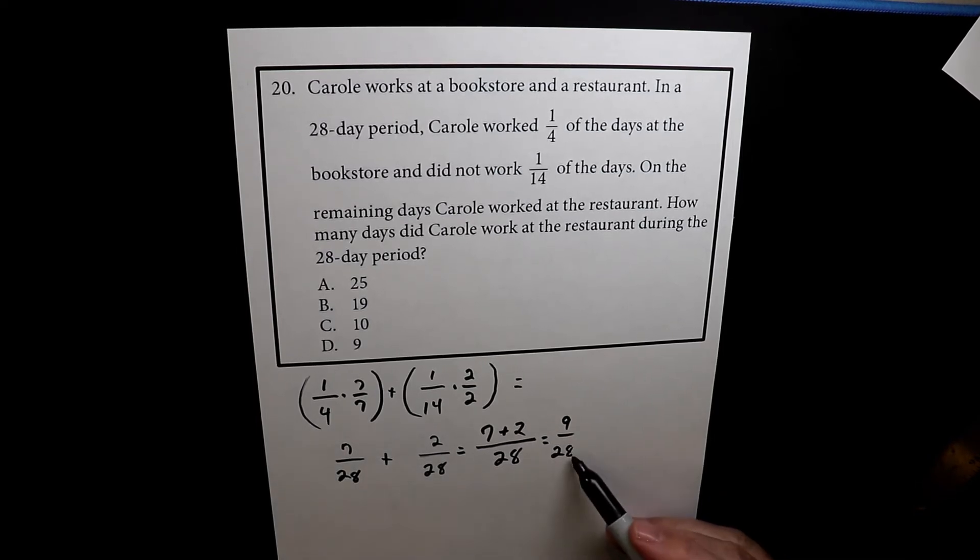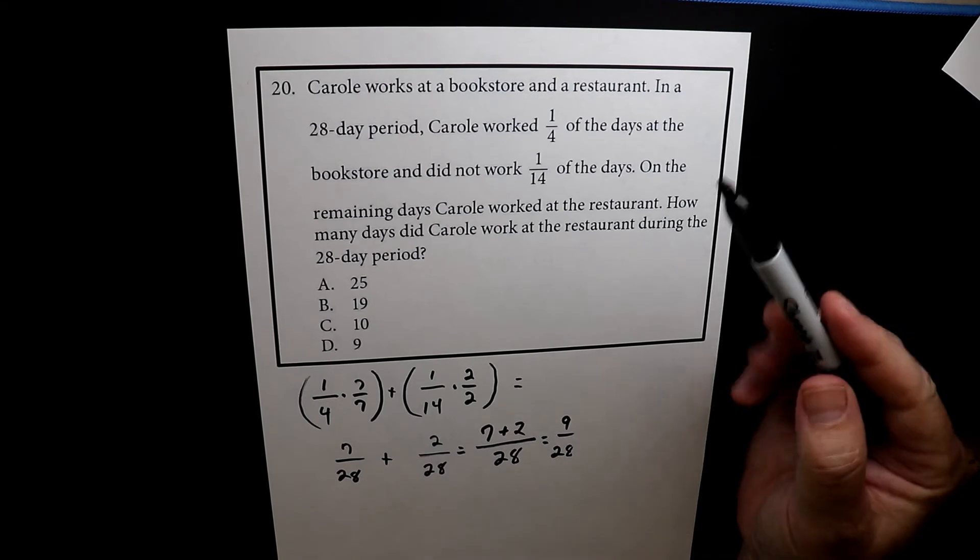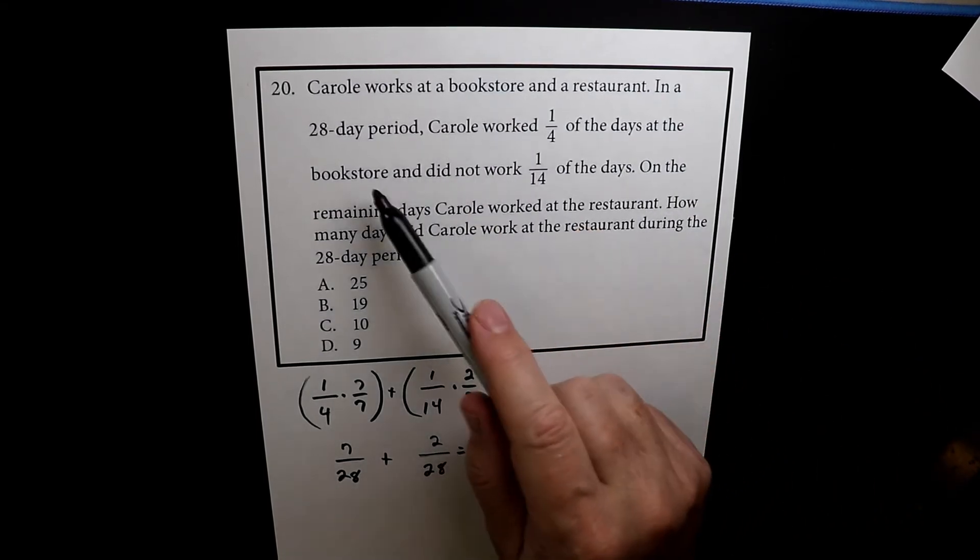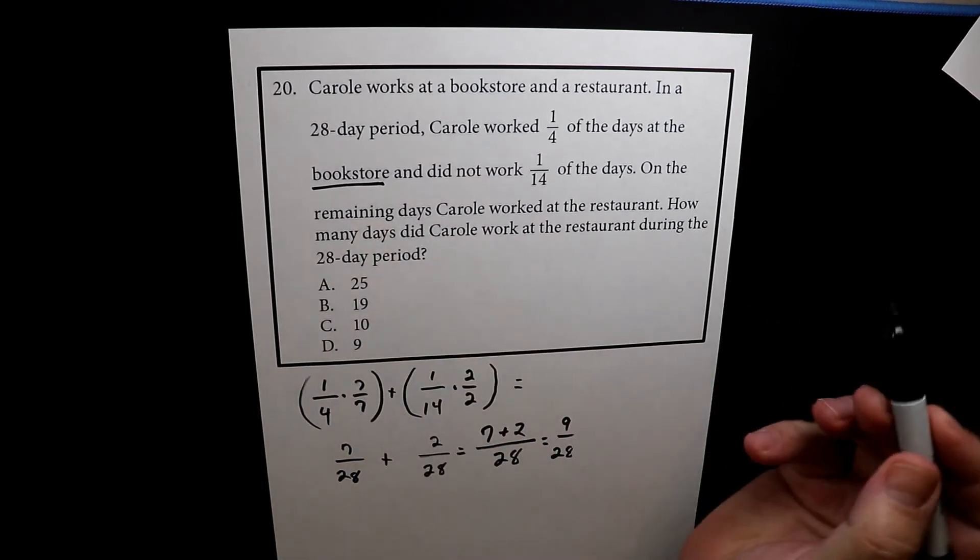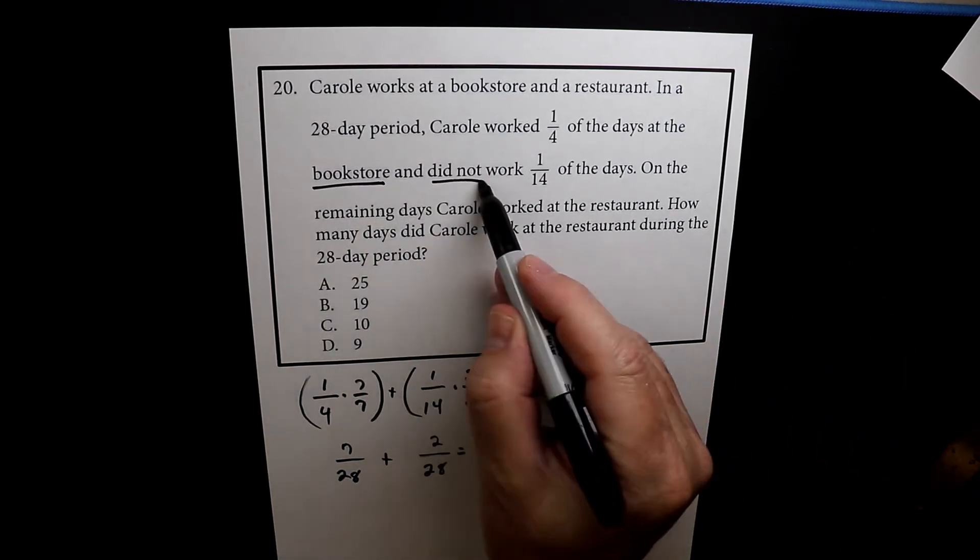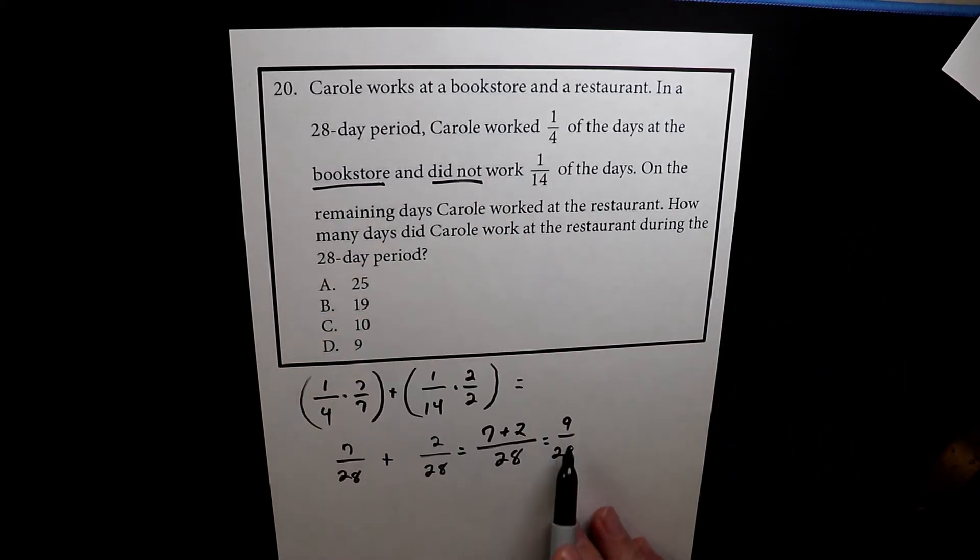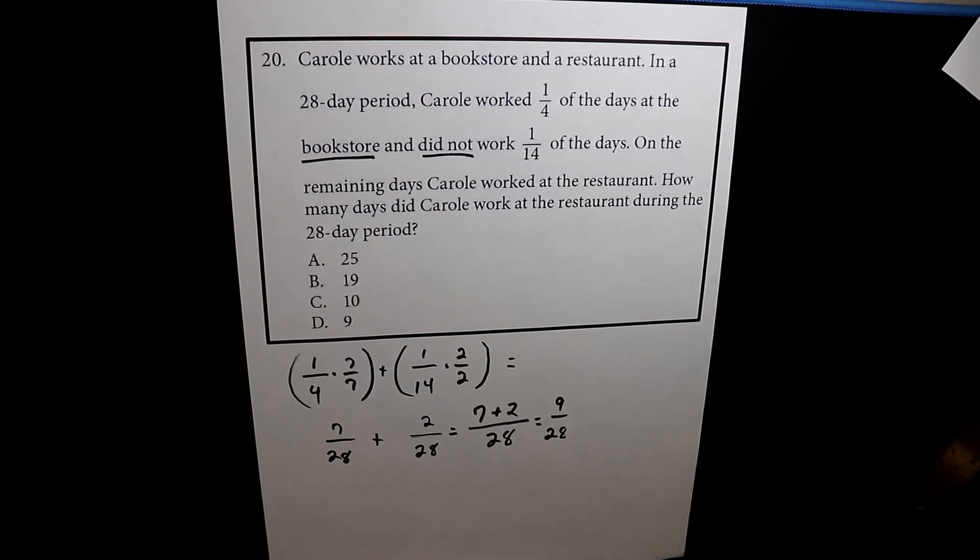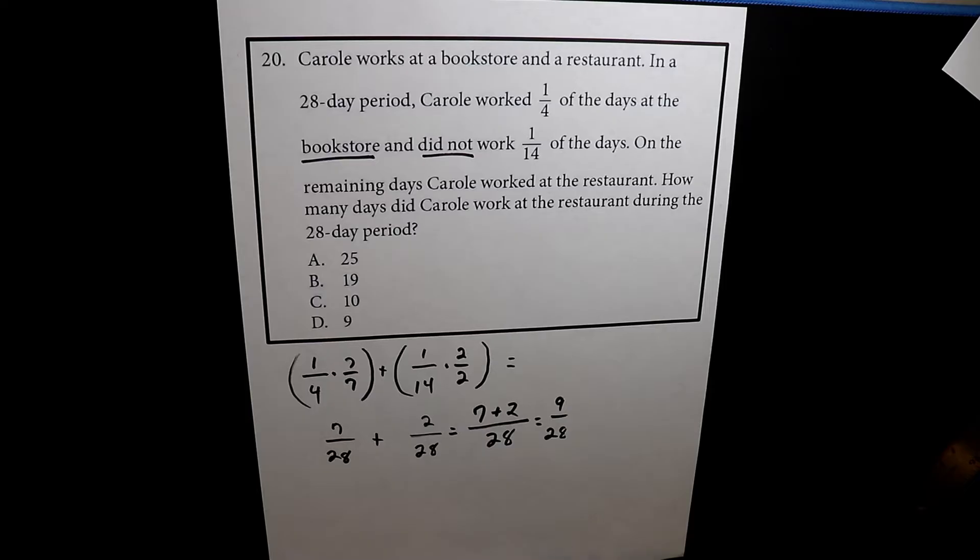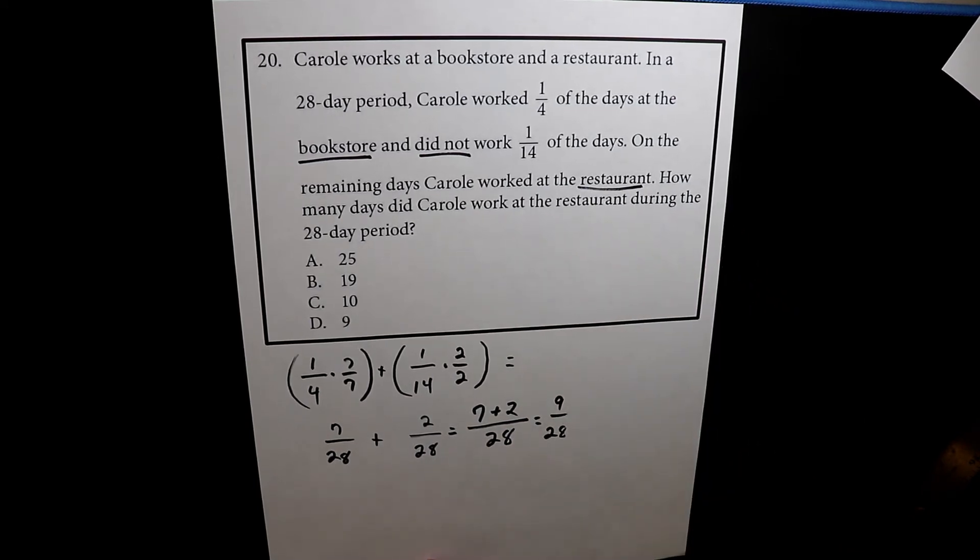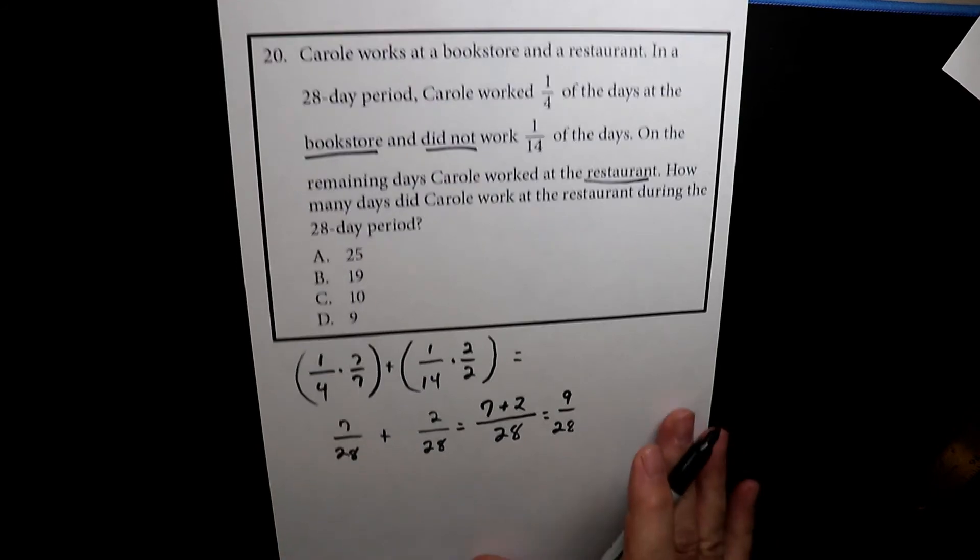So nine 28ths are time that Carol either worked in the bookstore, she was at the bookstore, or she did not work. So these are the two things, nine 28ths of the time. So going back to this graphic, this much time. So all the other time is the time that she worked at the restaurant. So she's there for the remainder of the time, so we just have to figure out what that is.